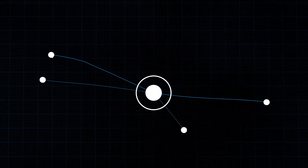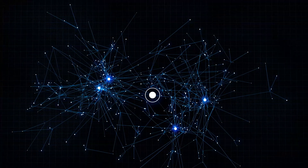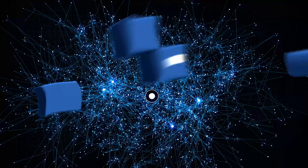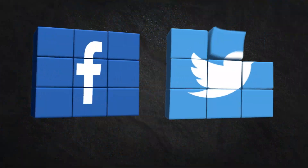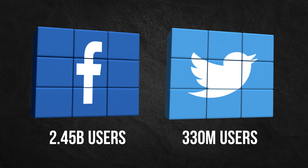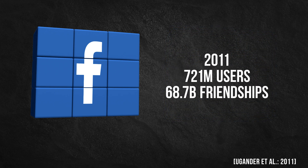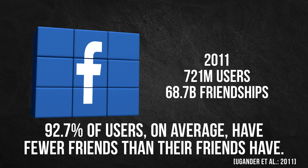There's another form of outbreak which relates to the friendship paradox — things that go viral on the internet. Social media websites like Facebook and Twitter offer an ideal platform for studying the friendship paradox, with huge global user bases and fully mapped connections. In 2011, researchers studied the entire Facebook social network and found that 92.7% of users, on average, have fewer friends than their friends have.